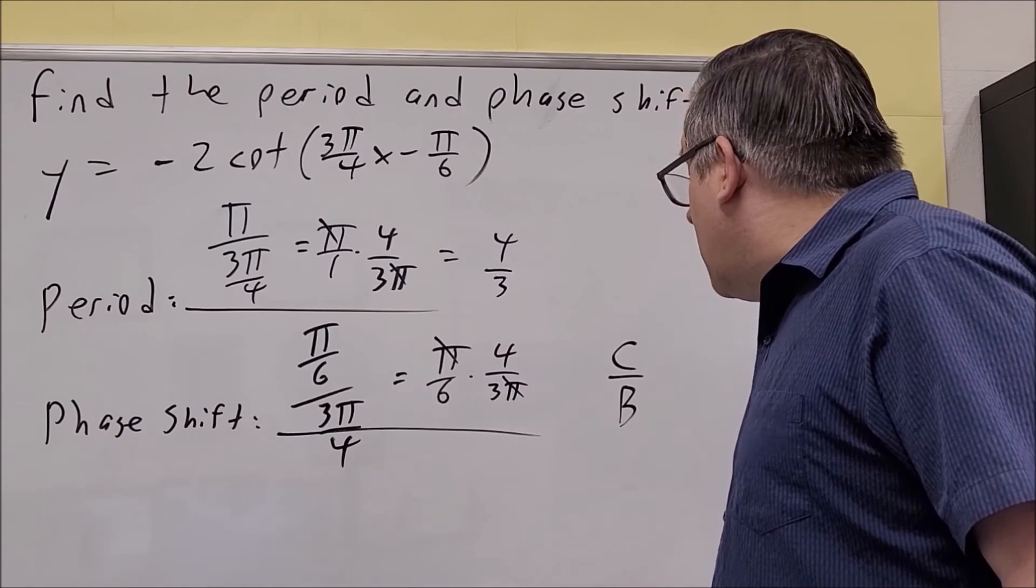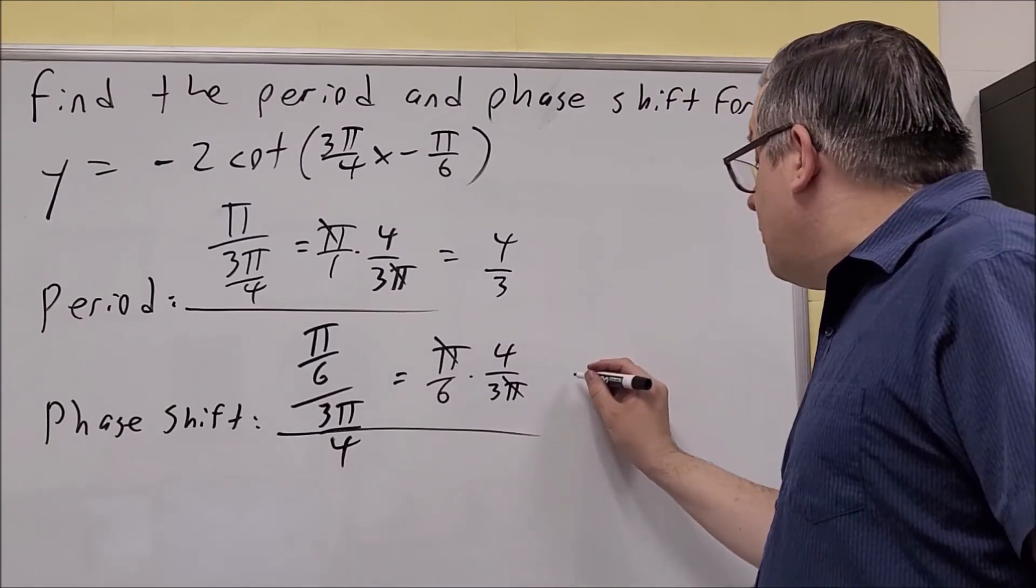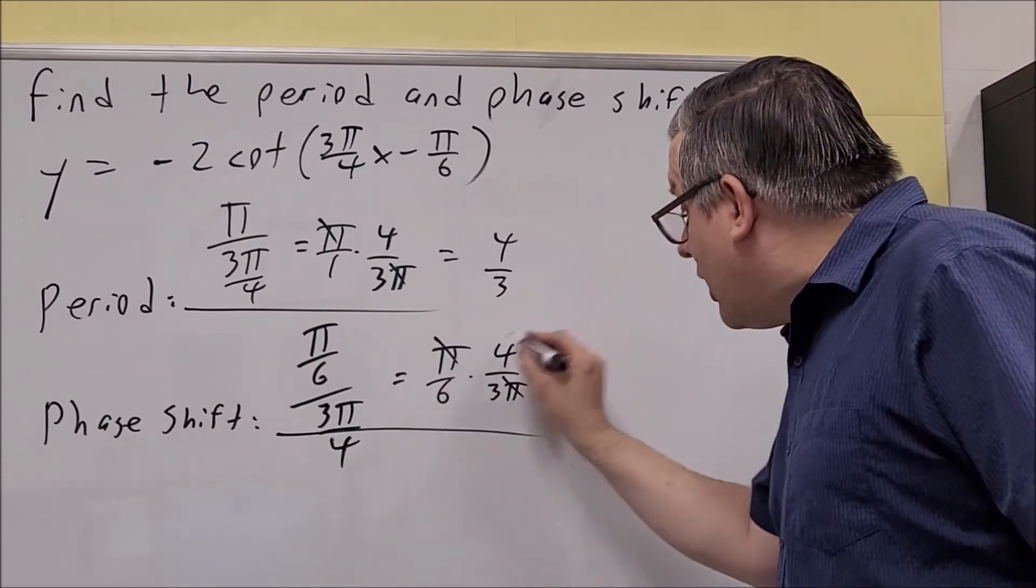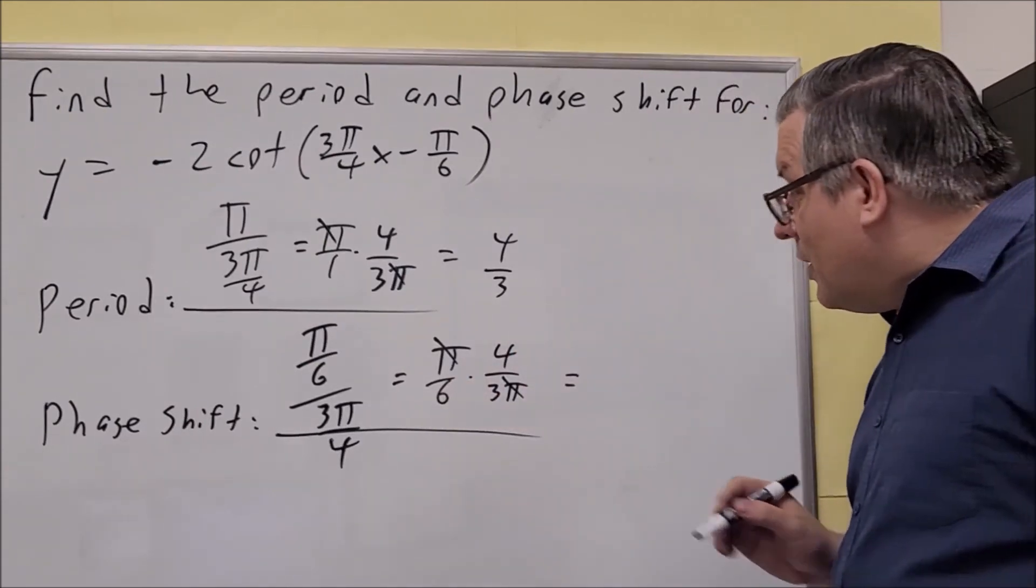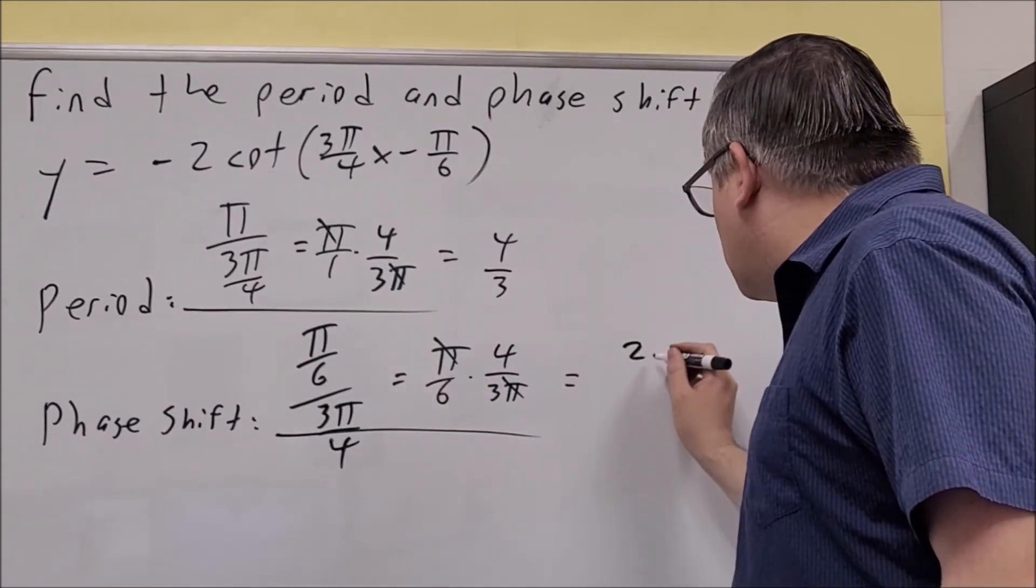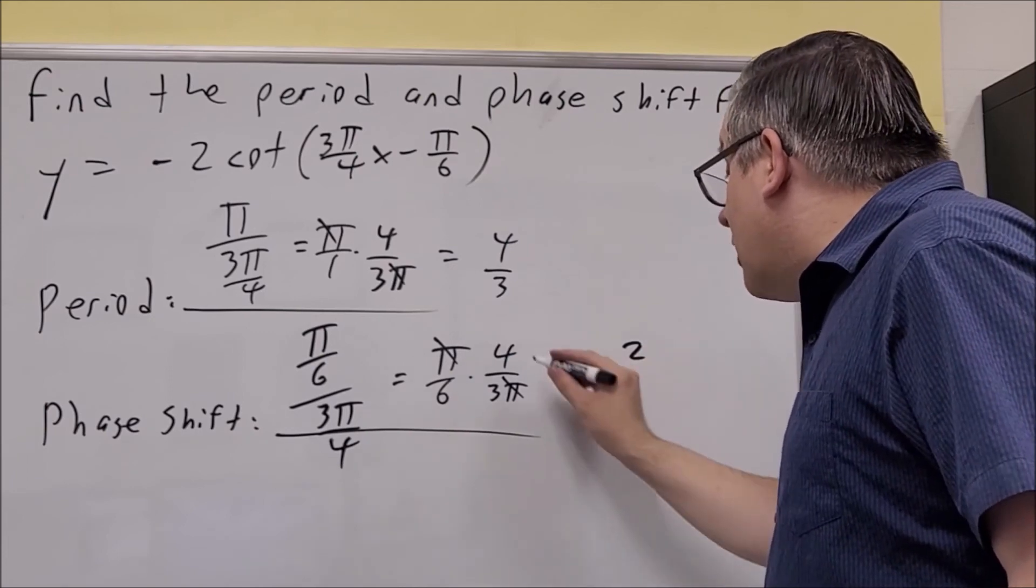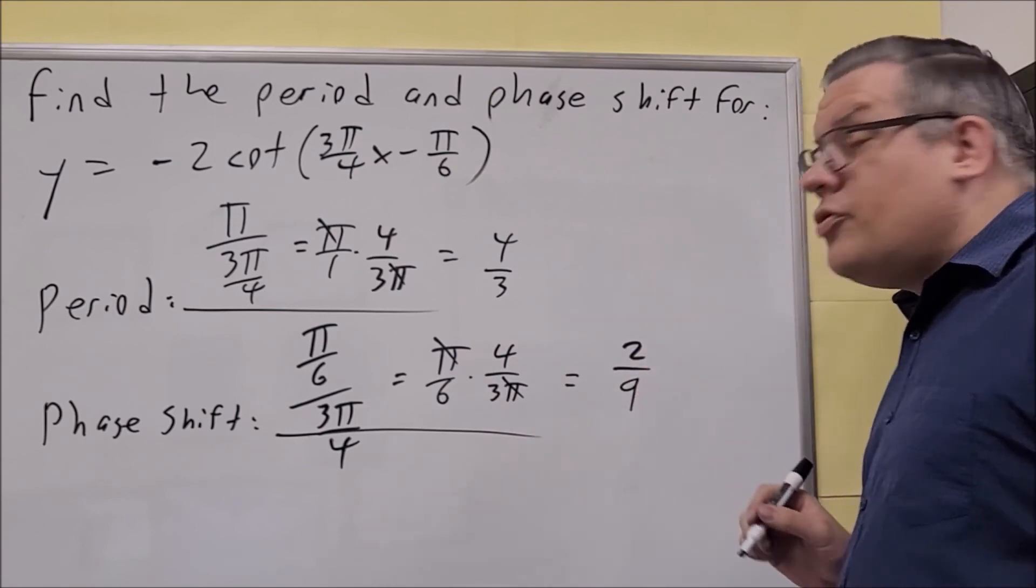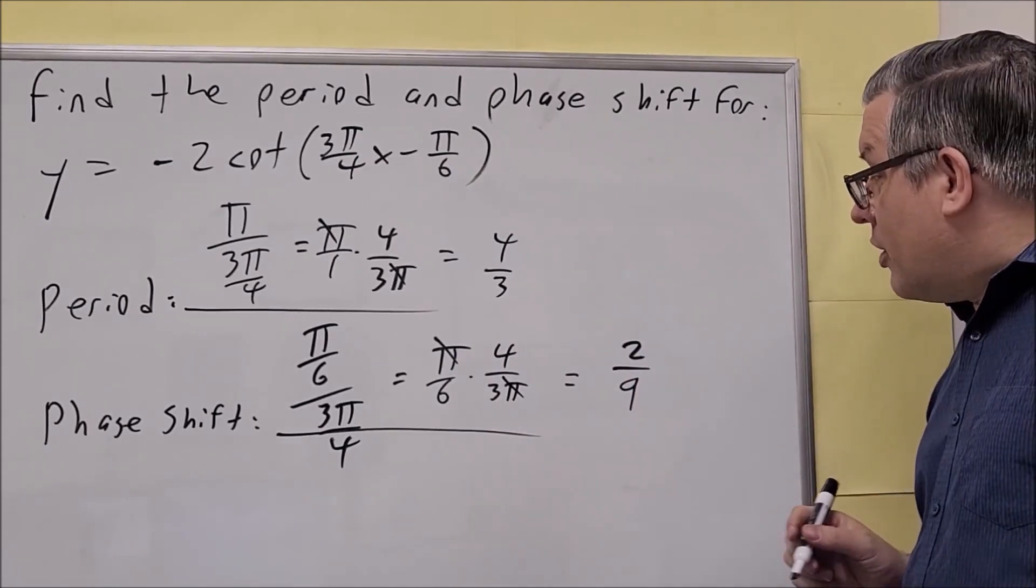The π's are going to cancel out for this one. You can also do a little reducing on that one. You can divide both of these by 2, and so we get 2 on top divided by 9 on the bottom. So we get 2 ninths will be your answer there.